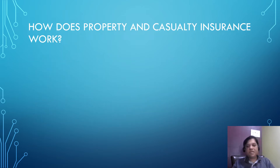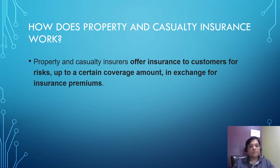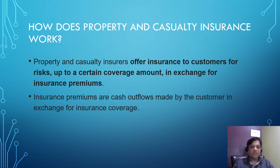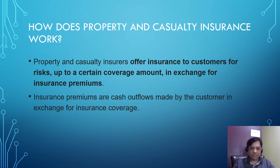How does property and casualty insurance work? Property and casualty insurers offer insurance to customers for risks up to a certain coverage amount in exchange for insurance premiums. Insurance premiums are cash outflows made by the customer in exchange for insurance coverage.